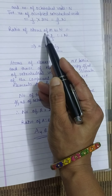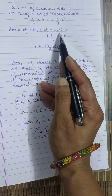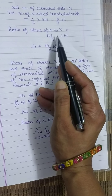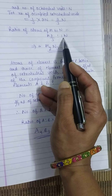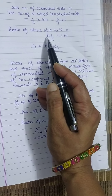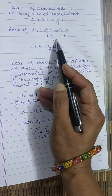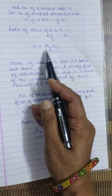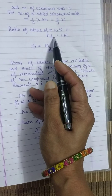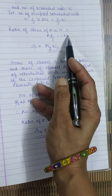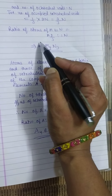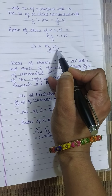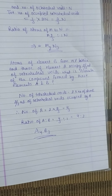The ratio of atoms of M to N: M has 2/3 of 2N, which is 2N/3, and N has N. So M is to N as 2/3 is to 1, giving M:N = 2:3. Therefore the formula of the compound is M₂N₃.